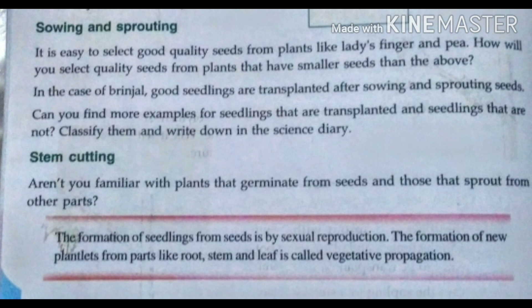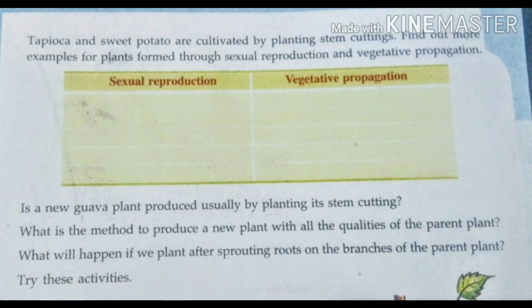Next, write examples for sexual reproduction. Then write the heading 'Vegetative Propagation' and explain what it is, followed by examples. This is the table for you. For sexual reproduction, examples are mango tree, sunflower, cucumber, bottle gourd, etc.